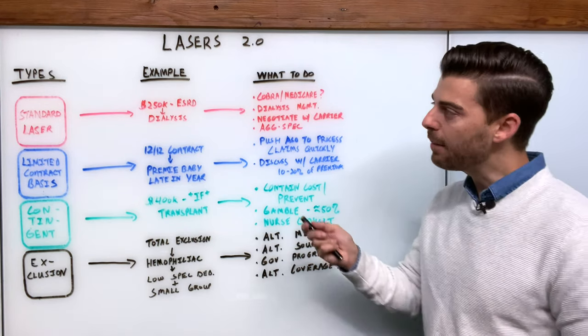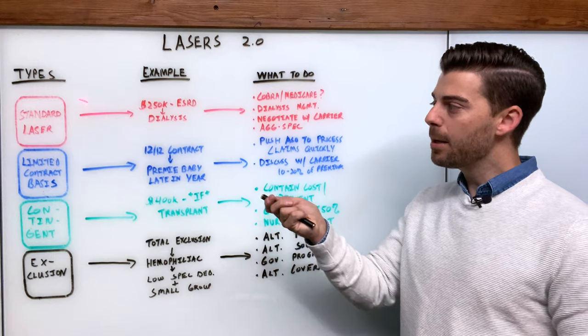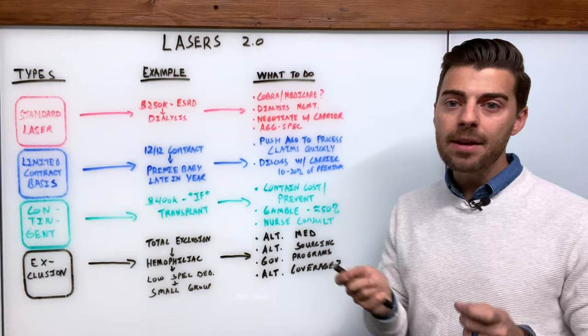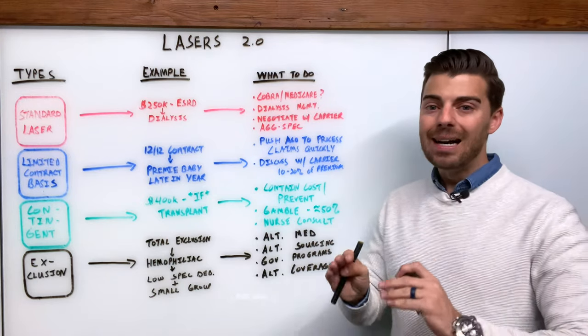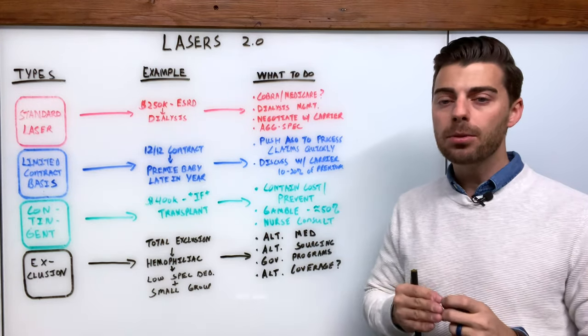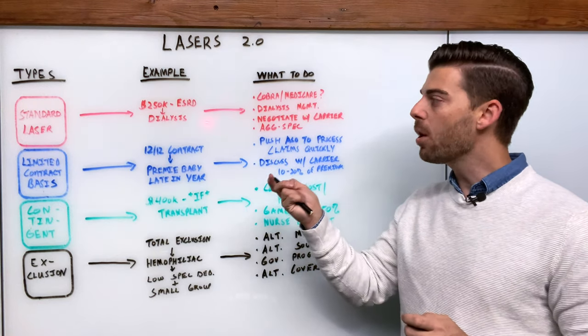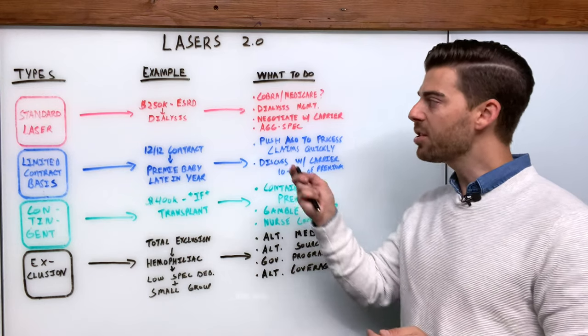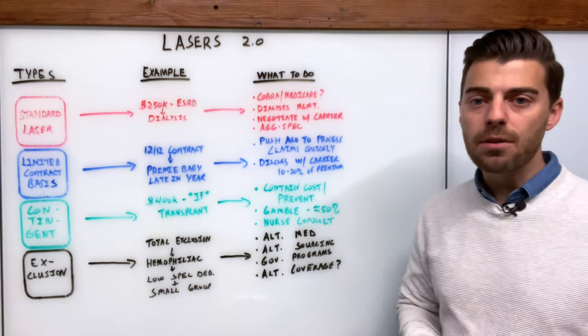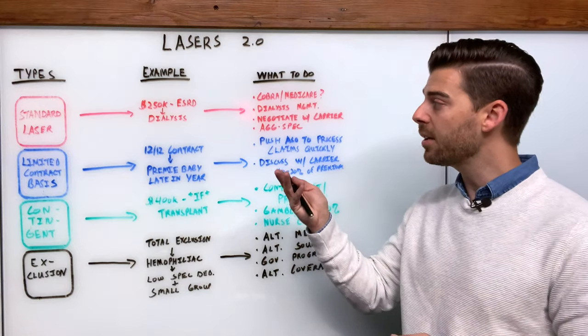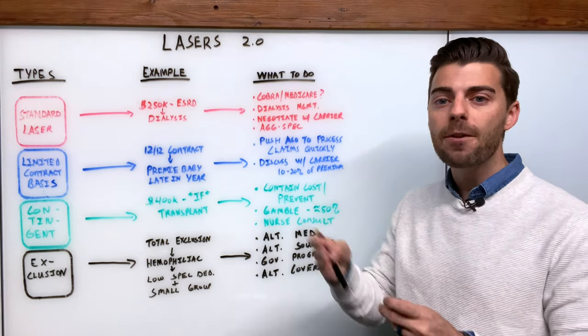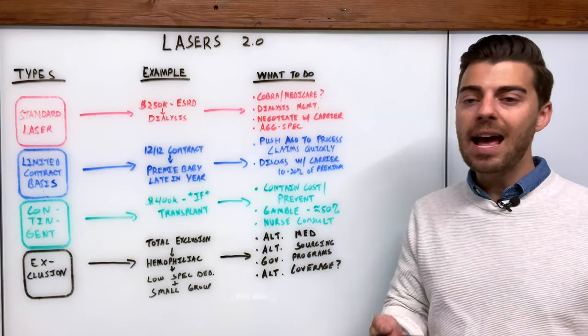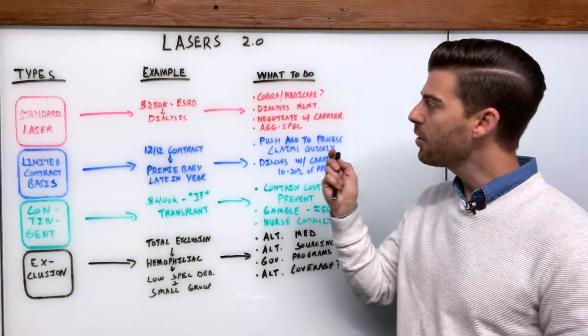The one that everybody probably is familiar with, especially if you watched my previous stop-loss video, is your straightforward standard laser. What do I mean by that? Just a separate dollar amount, a higher dollar amount than the deductible that's currently being quoted for an individual or multiple individuals based on some ongoing conditions that they have. They will just assess a singular dollar amount for that individual regardless if it is necessarily a claim that's related to something specific or is it a culmination of many different conditions or treatments that that person is having.